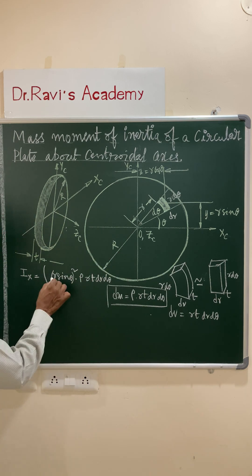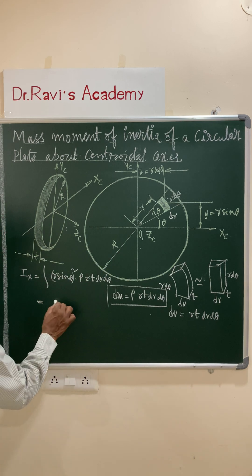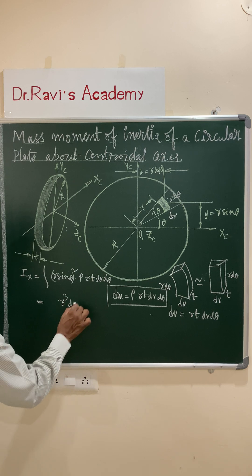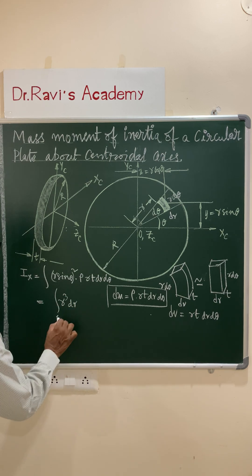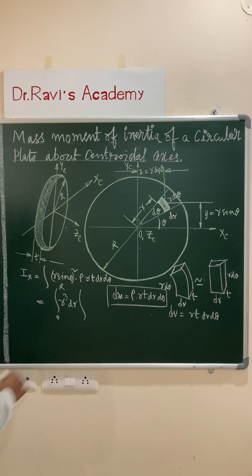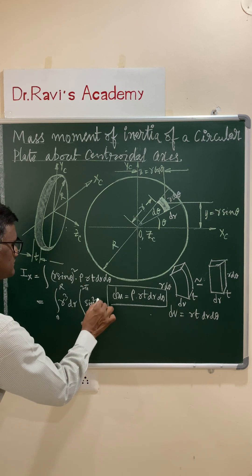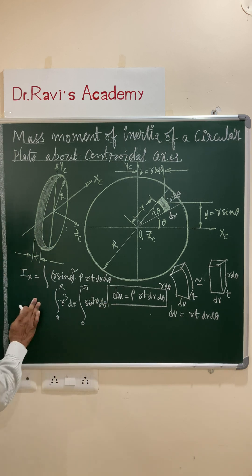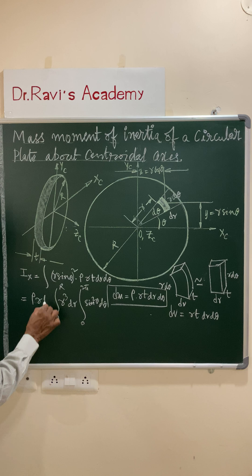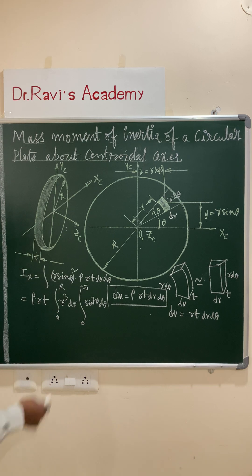You can write down this is r square and one r it is r cube dr integral. It is 0 to capital R and another integral is 0 to 2 pi. It is sin square theta d theta. And the remaining terms, keep outside, it is rho r t.